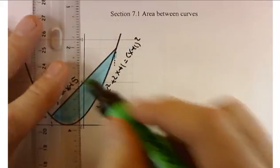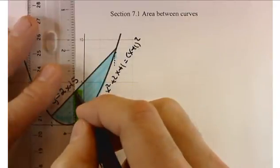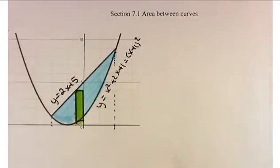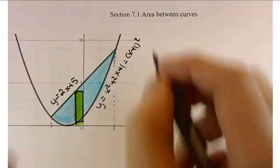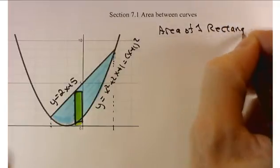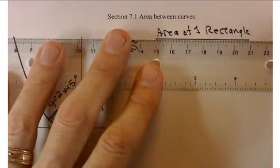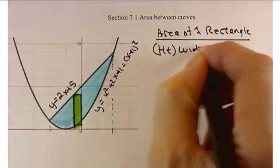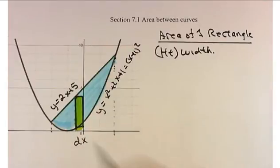Here's how we're going to work this. It reflects the fact that when we find areas, we can think of them as Riemann sums. I'm going to take a little slice through my interval and calculate the area of that one slice. Let's find the area of one rectangle. The area of any rectangle is going to be height times width. The width is going to be pretty simple — it's going to be delta x, or dx.